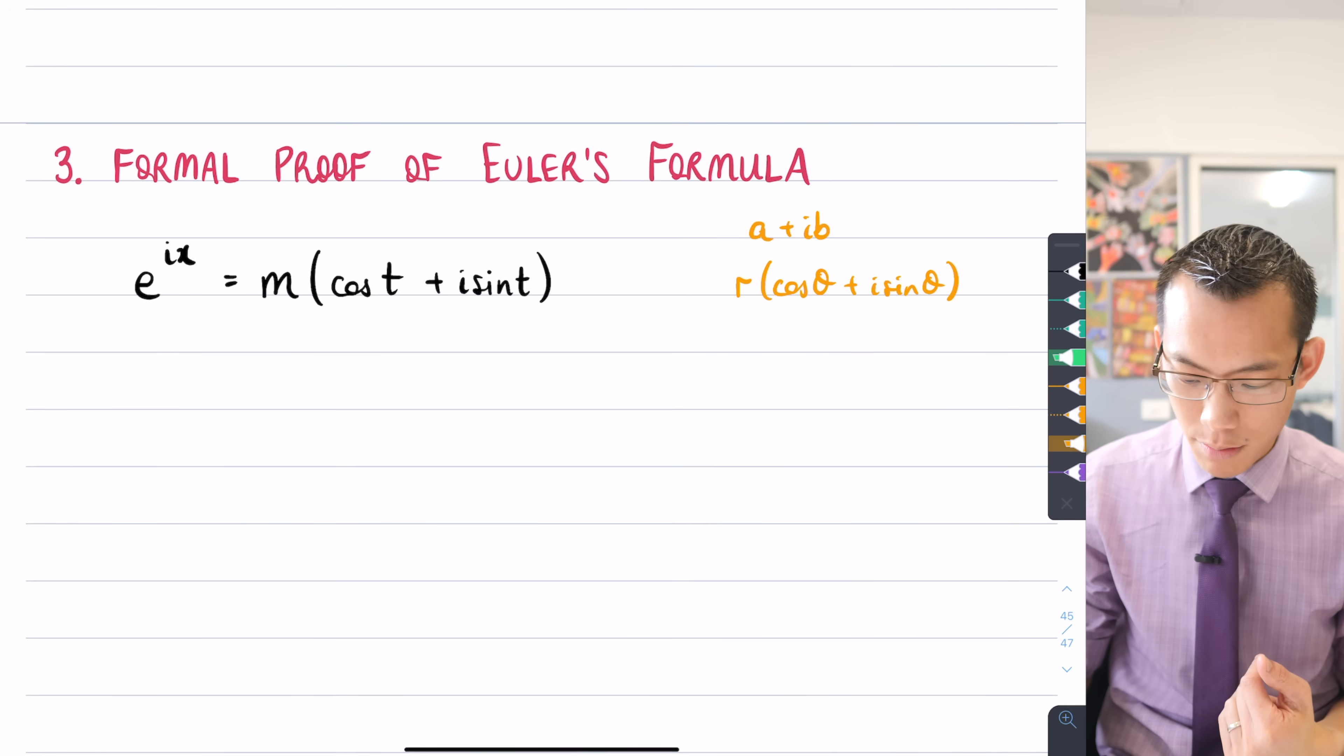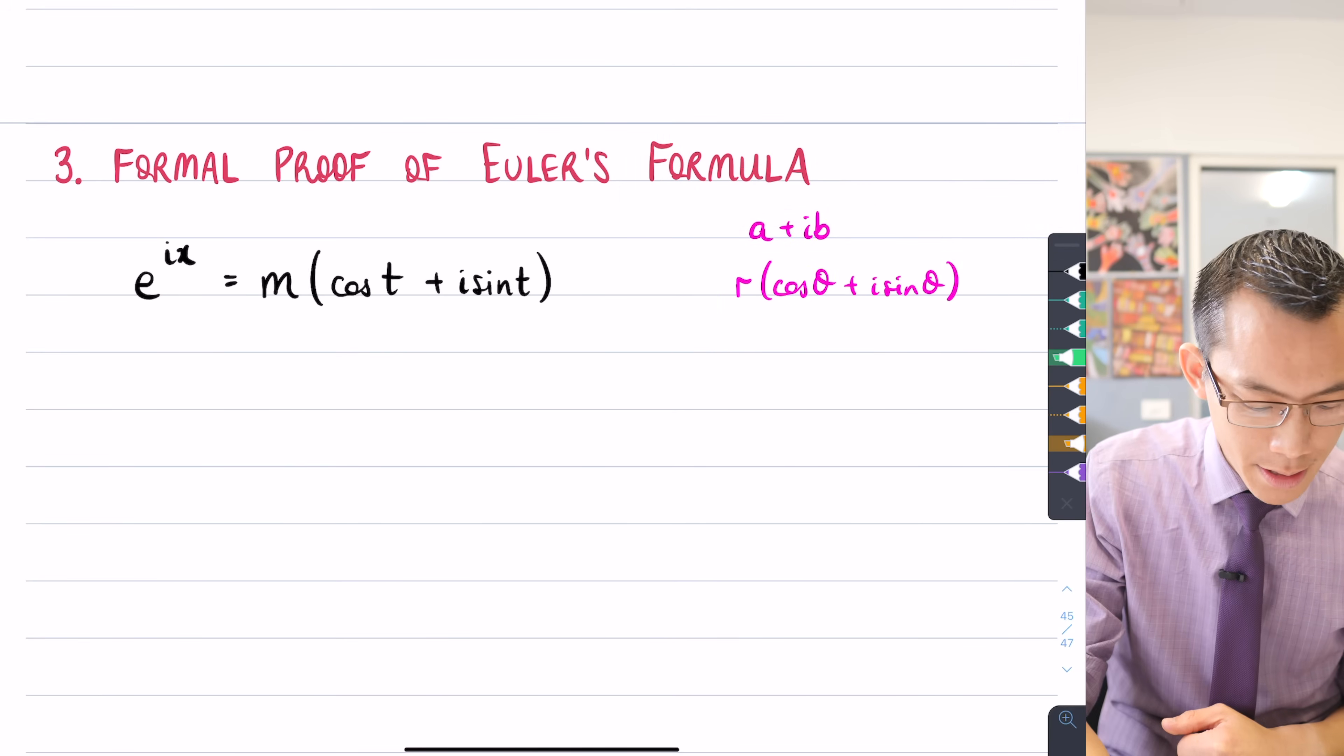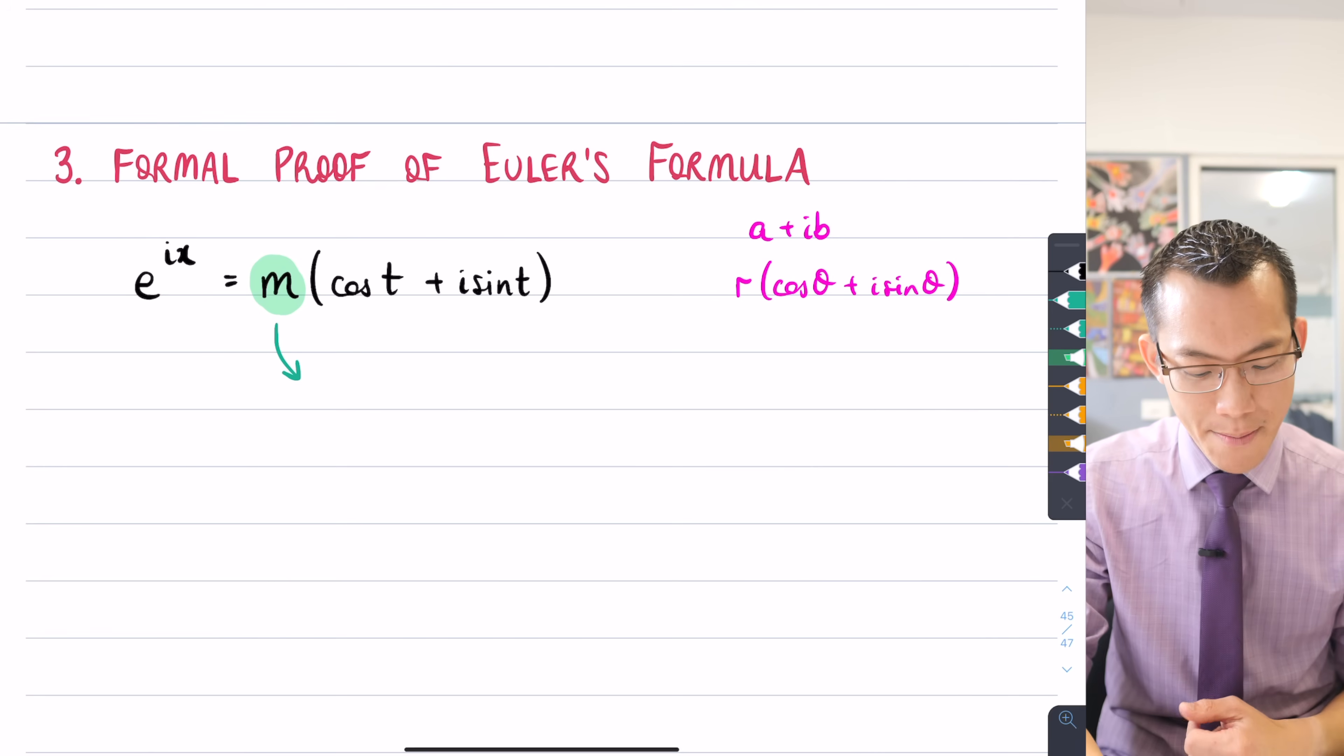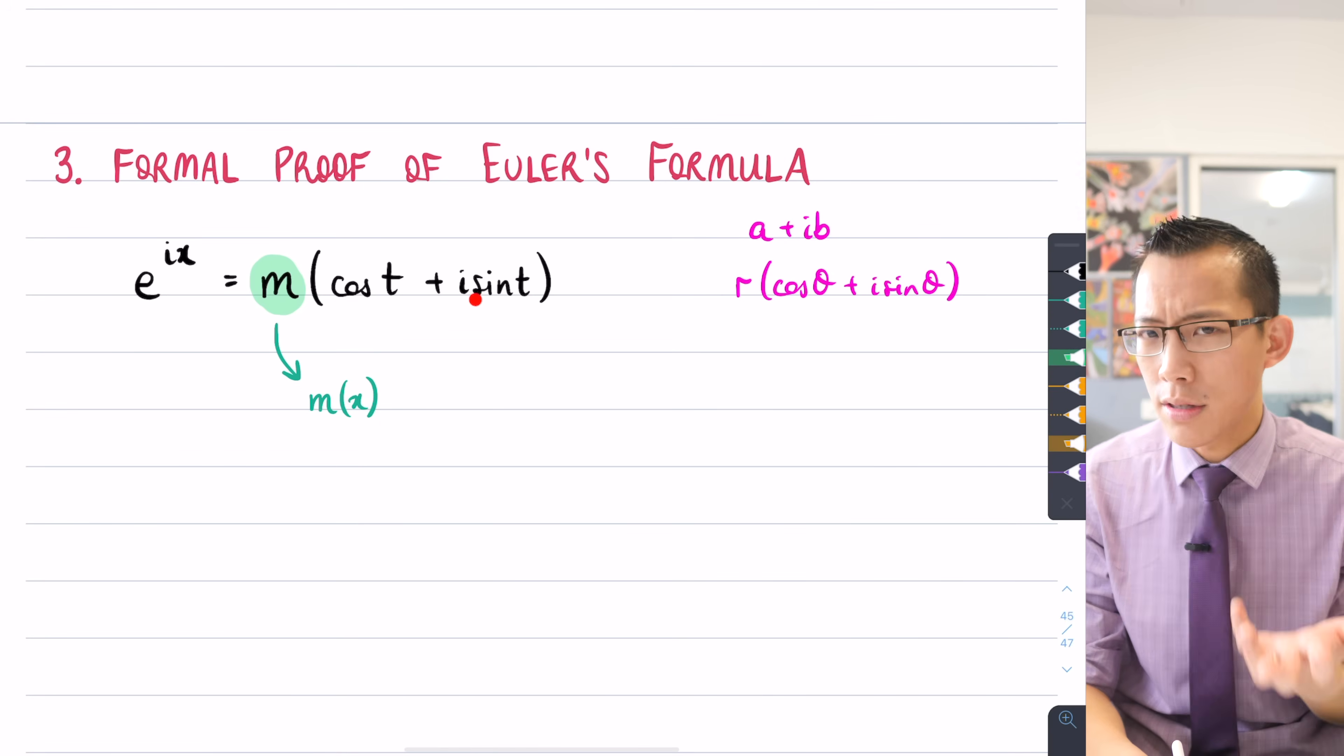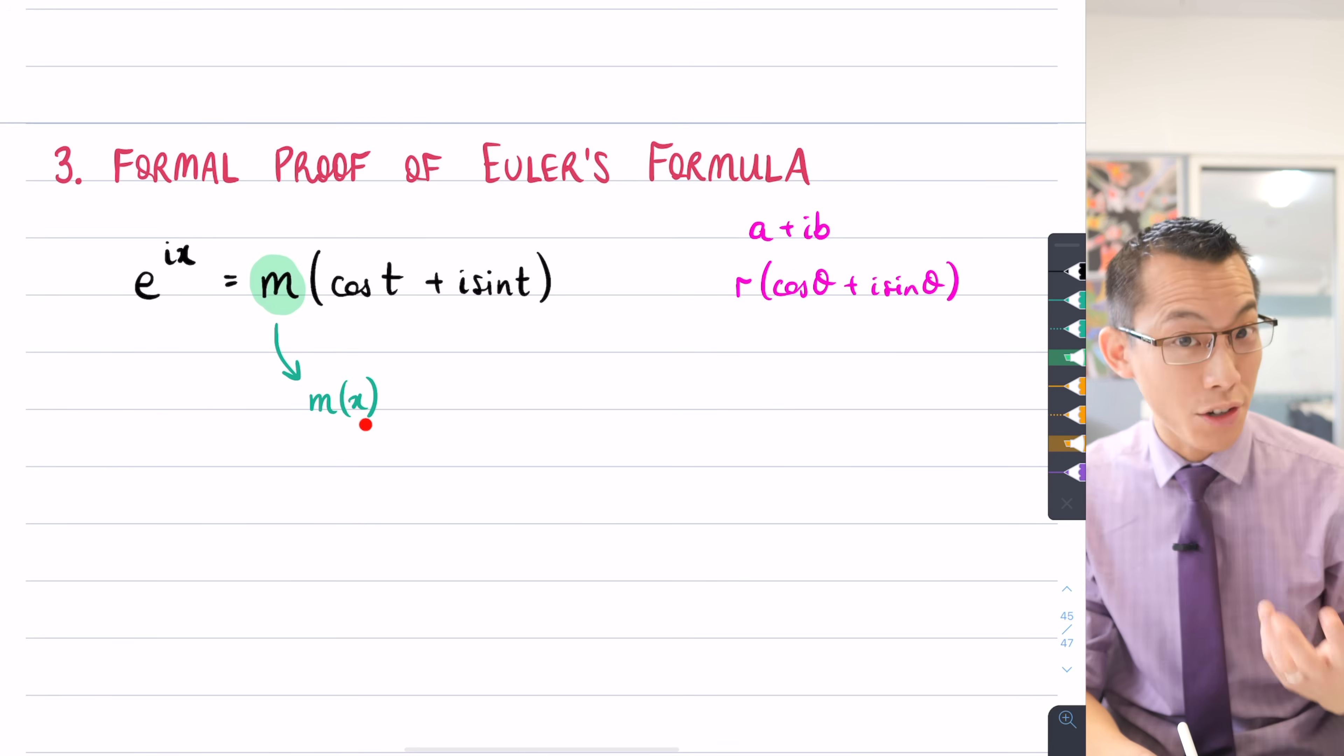Which means that, I'll change this over to purple, I'm going to say this modulus here, when I say m, I don't just mean a number, I mean m as a function of x. If x can change, if it's variable, then the modulus of this complex number can change, so therefore its modulus should be able to change as well. So m is a shorthand for m as a function of x.